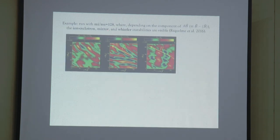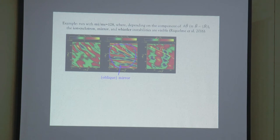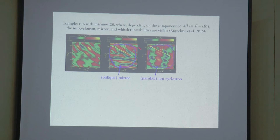Looking at a snapshot of the same simulation, where the magnetic field points in one direction, we see oblique modes — wave vectors pointing oblique with respect to the magnetic field direction — and those are the mirror modes. In the direction perpendicular to the plane of the simulation, the dominant instability is the ion cyclotron modes, which grow along the direction of the magnetic field. On top of that, there are other modes also pointing parallel to the magnetic field but on much smaller scales — those are the Whistler modes.